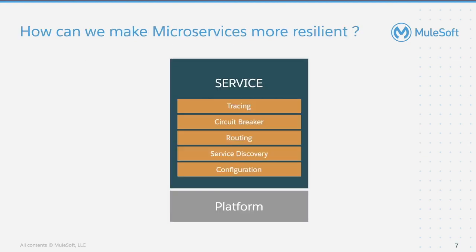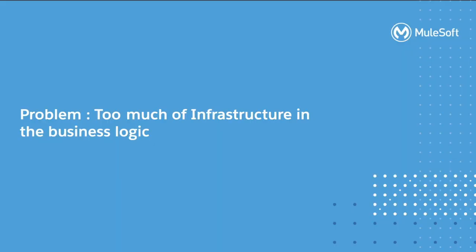What happens is that developers now have to think more about making microservices resilient. Tracing — a developer implementing microservices should think about how to ensure the footprint of that service is traced. Circuit breakers — they have to think about what happens if one service is down and how to minimize the impact on other services. Routing — with tens, hundreds, or thousands of microservices, how to route data between them is very important. Service discovery — how service A recognizes service B is critical. Lastly, configuration needs to be consistent. Developers end up building all these infrastructure capabilities into the service itself. The problem is you suddenly have too much infrastructure in the business logic. This is wrong, as microservices are responsible for one thing only: to solve a business problem.